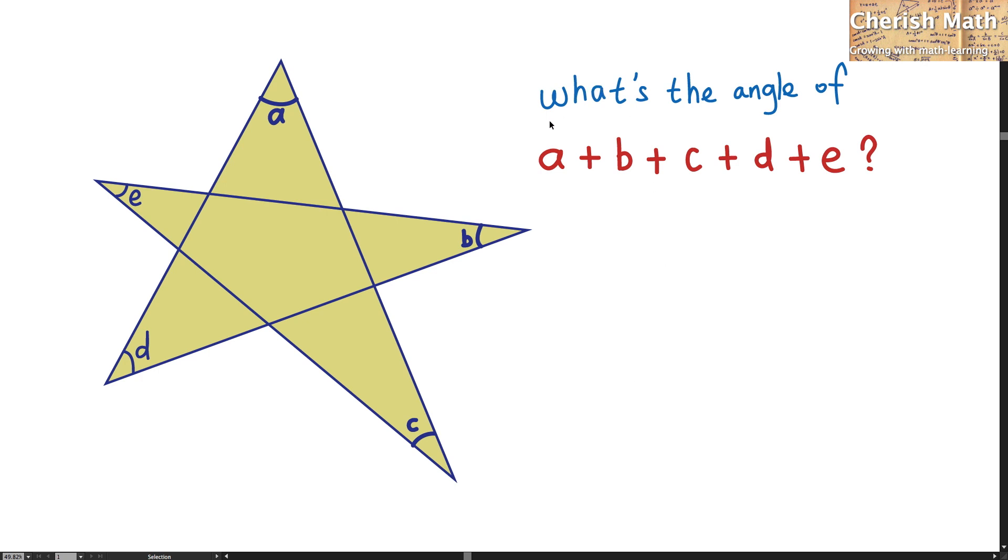The question is, what's the angle of A plus B plus C plus D plus E? That means we want to find the sum of the angles from each corner of the star.